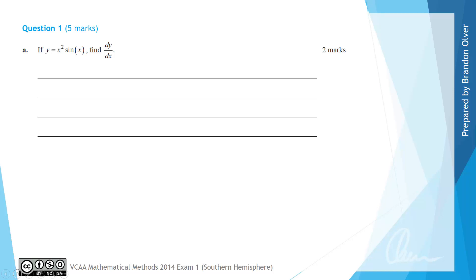For part A, if y equals x squared times sine of x, find dy/dx. If we inspect this function, we can see that it's two functions multiplied together, so we're going to need to use the product rule.